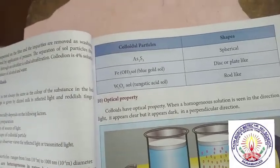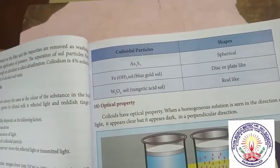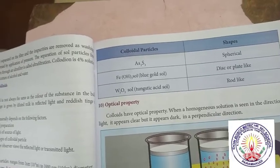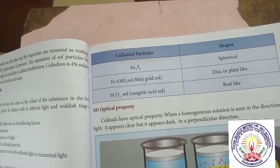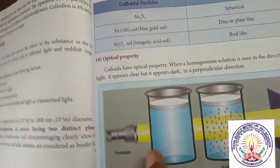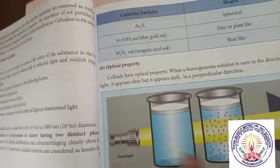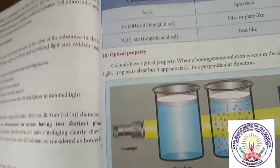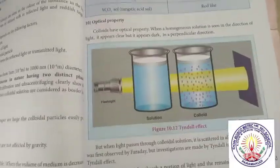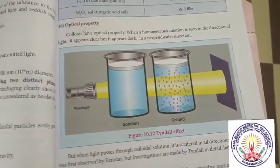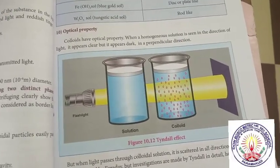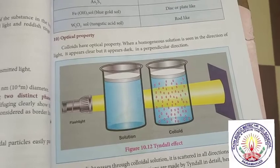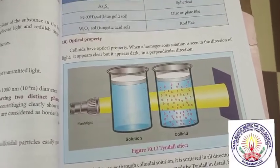Optical property: colloids have optical property. When a homogeneous solution is seen in the direction of light, it appears clear but appears dark in a perpendicular direction. When light passes through a colloidal solution, it is scattered in all directions. This effect was first observed by Faraday but investigated in detail by Tyndall — hence it is called the Tyndall effect.